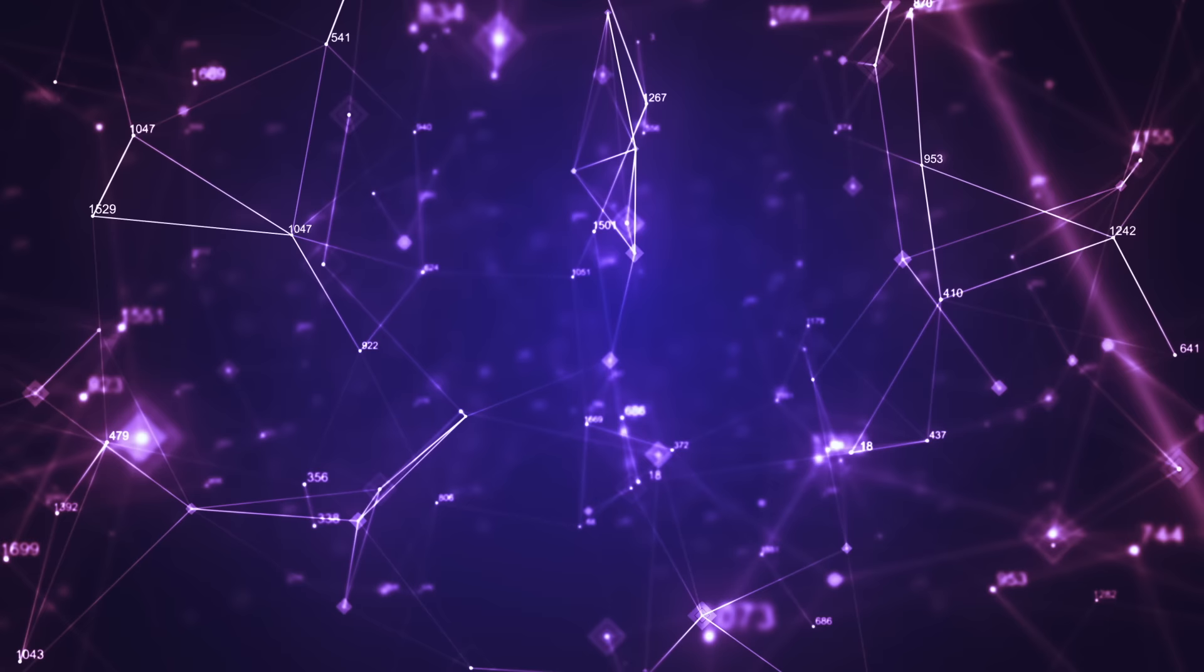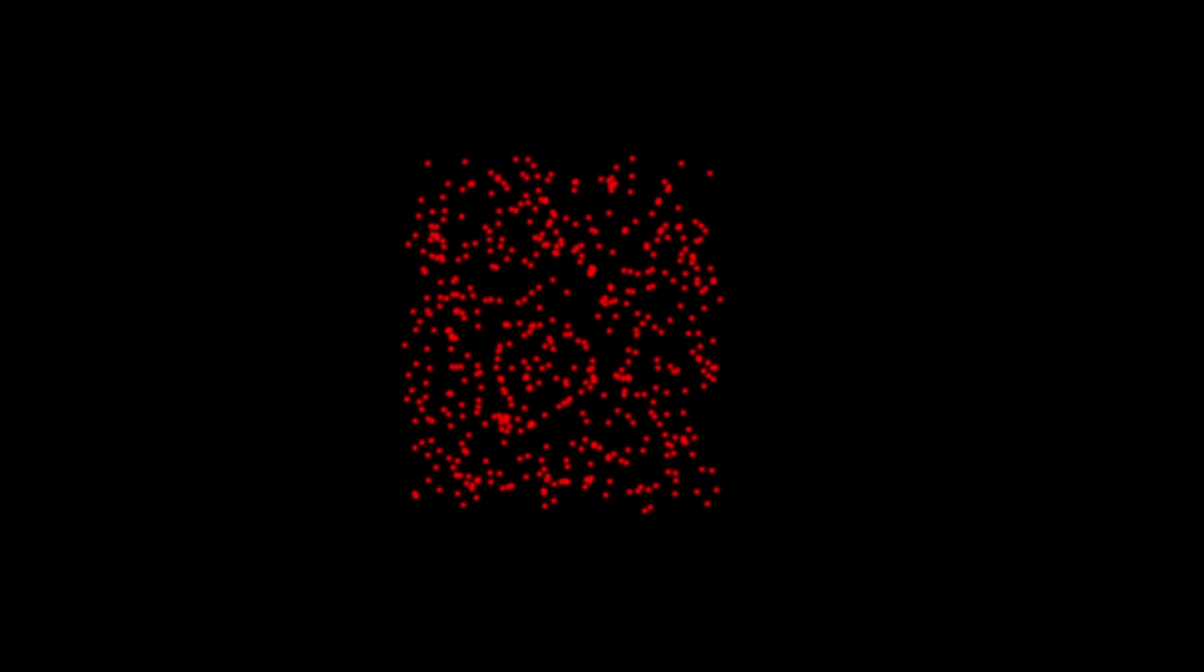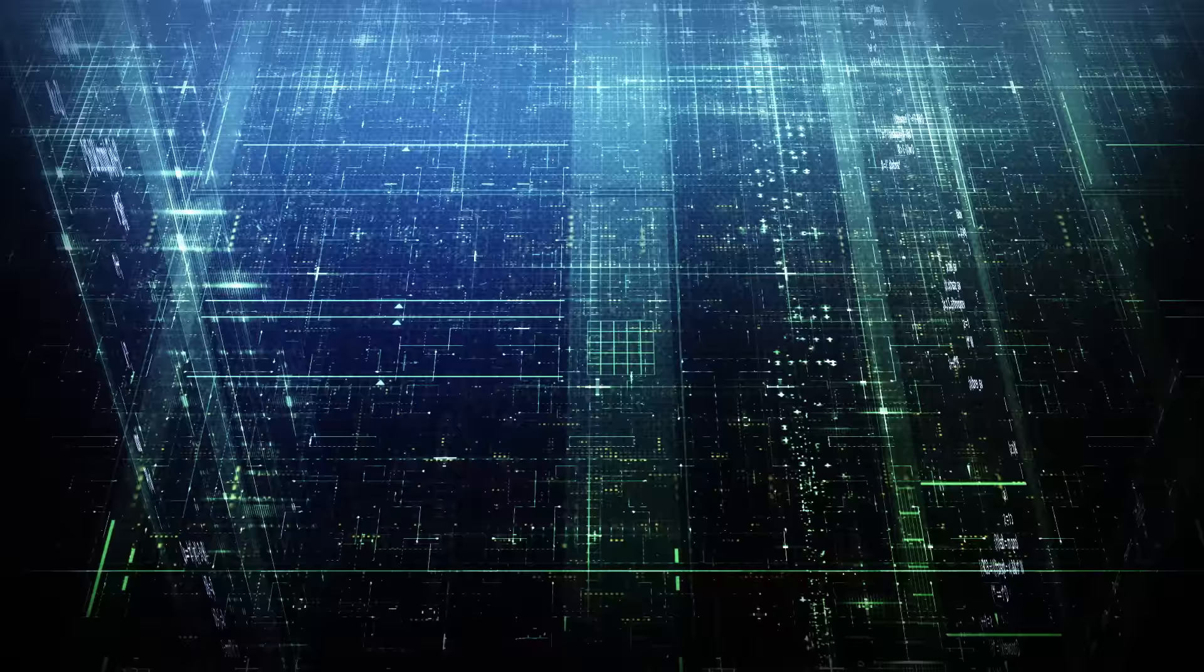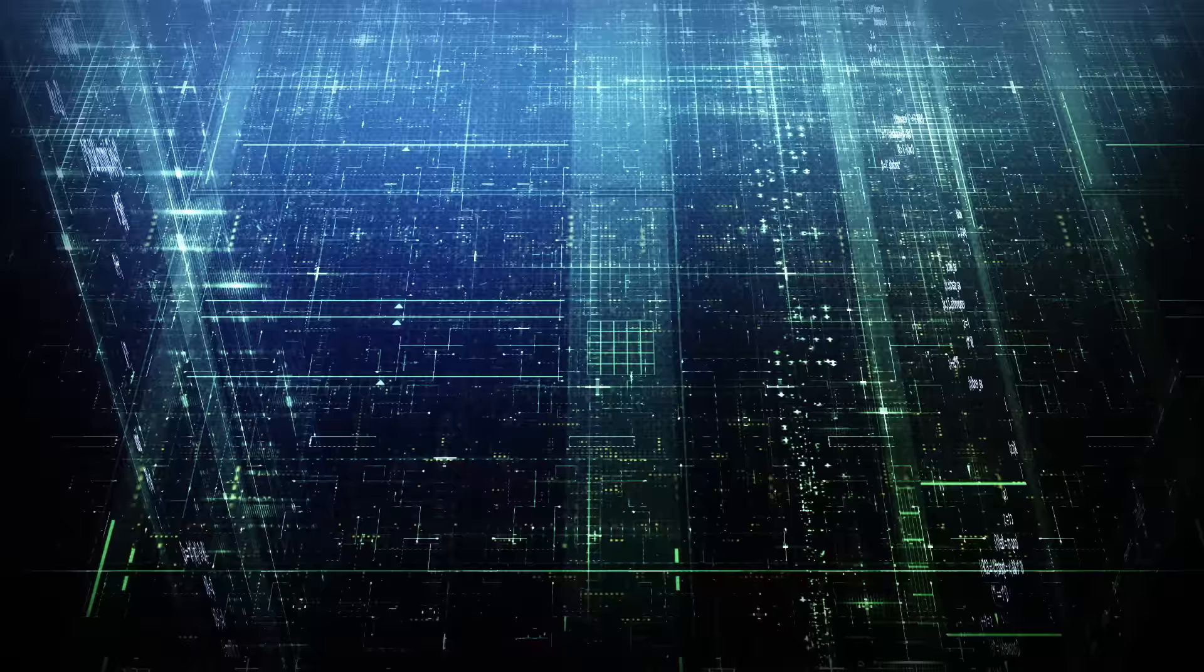At its core, physical reality is constructed from discrete units of information, giving rise to our understanding of space-time. In contrast, temperature emerges from the combined movement of atoms, and a single atom doesn't possess an inherent temperature. This thought-provoking concept opens up the remarkable idea that our entire universe might be a computer simulation.